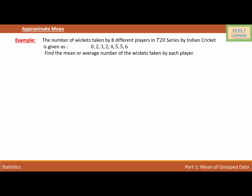Approximate mean example. The number of wickets taken by 8 different players in a T20 series by the Indian cricket team is given as 0, 2, 3, 2, 4, 5, 5, 6. Find the mean or the average number of wickets taken by each player.